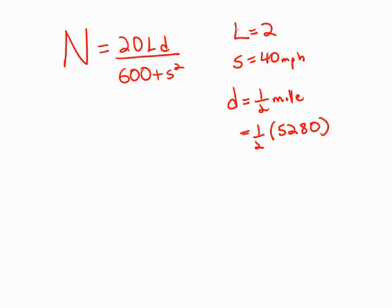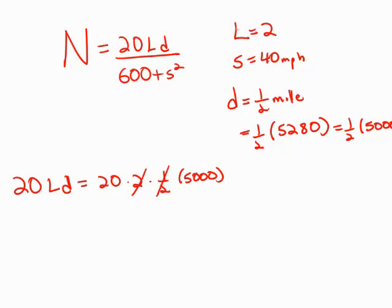Now, it would be a huge mistake to multiply one-half times 5,280. We're just going to estimate that this is one-half times 5,000. And I'm not even going to multiply that because I notice this numerator, 20LD, I'm actually going to be multiplying 20 times L, which is 2, times one-half times 5,000. And the 2 and the one-half cancel. I never even have to multiply that. So this is 20 times 5,000. That's just 100,000 in the numerator.